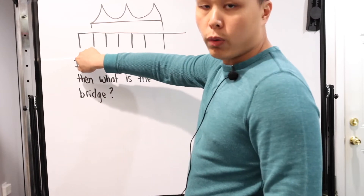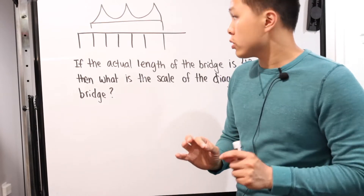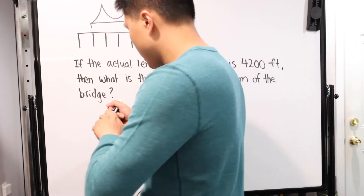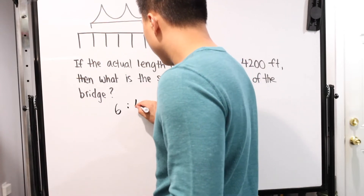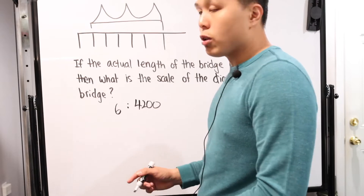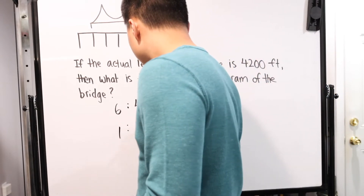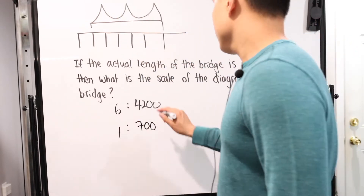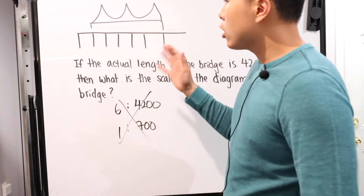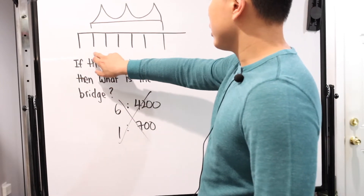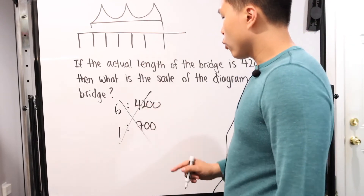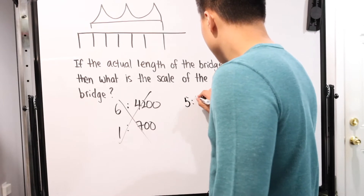The caveat I can see going wrong: the ruler doesn't start at zero — it starts at one. So it's very tempting to say we have six tick marks, making it six to 4,200. But if we count correctly — we start here and end here — that's actually five tick marks. So rather than six to 4,200, we have five to 4,200.